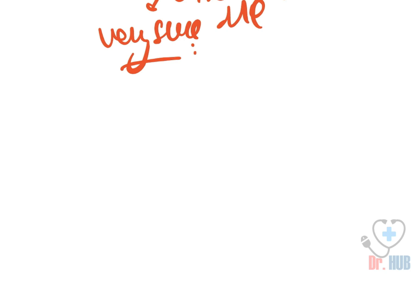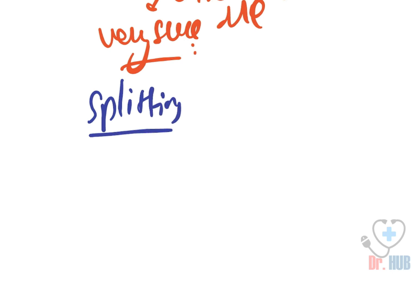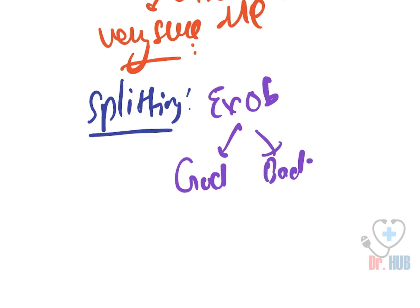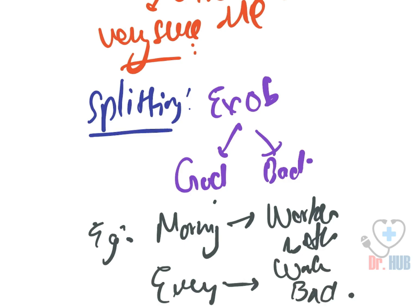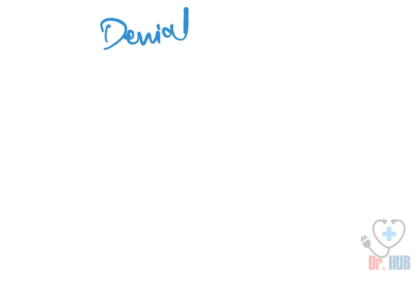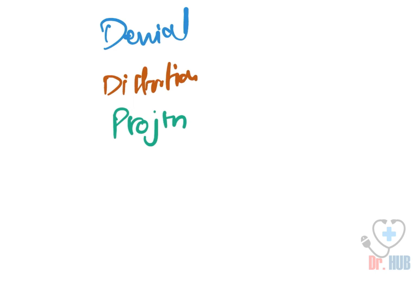Next we look at splitting. Splitting means that external objects are divided into all good and all bad. For example, you tell that during the morning the workers are performing better, and in the evening the workers are bad. To summarize the narcissistic/psychotic defenses: denial, distortion, projection, and splitting.